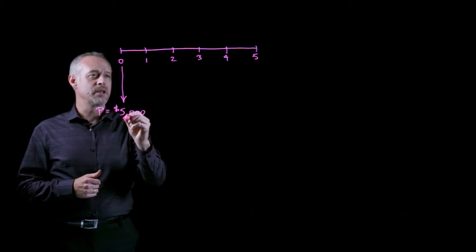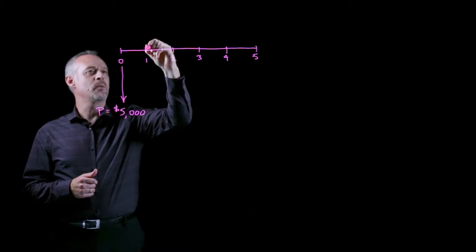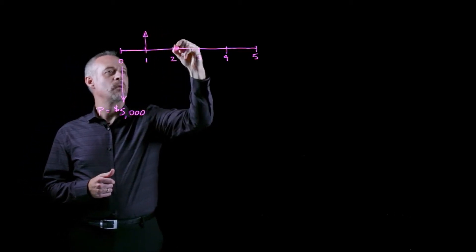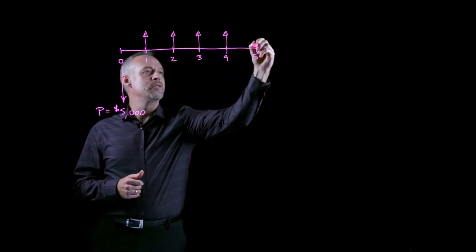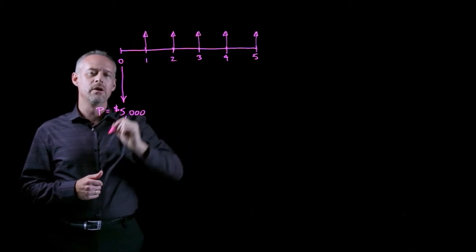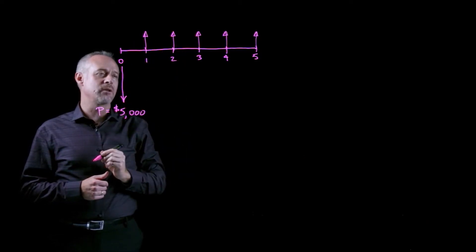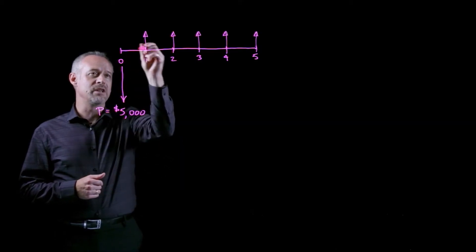Now the savings that occur each year we can represent as an up arrow and we'll represent that as an up arrow at the end of each of the years. It may be that the savings occur throughout the year, but for the time value of money calculation purposes we'll place the savings at the end of each year.